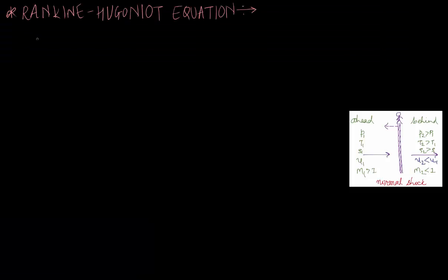Now we will derive what is known as the Rankine-Hugoniot equation. Let us first consider a normal shock wave. We know that across a normal shock, static pressure increases. And that means we can use a normal shock as a thermodynamic device to compress a gas.